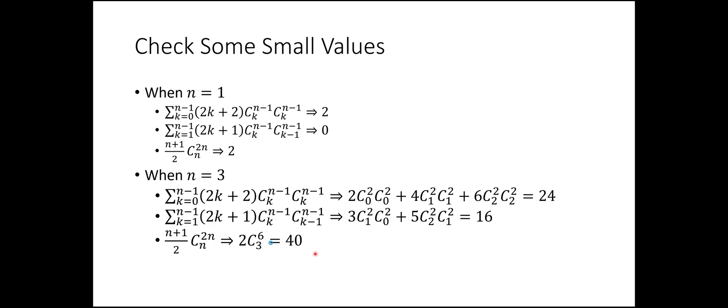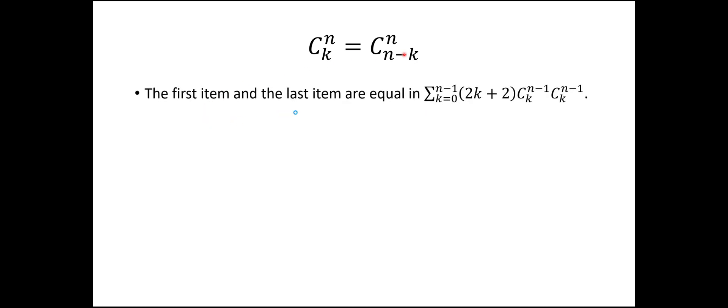You can check small values to verify the equality holds. Now we're going to prove it. The first identity we need is C(n, k) equals C(n, n-k). If you expand it out: n! divided by k! times (n-k)! is exactly the same as the right-hand side. So you can verify this identity.